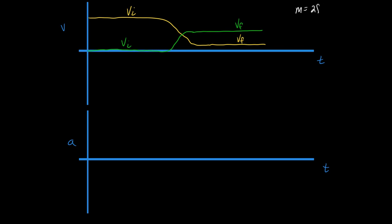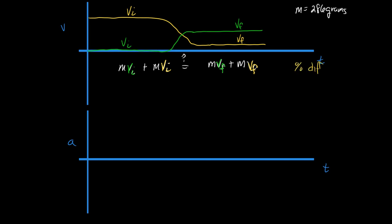You're trying to test if M times V-final plus M times V-final equals M times V-initial plus M times V-initial — comparing the yellow and green cars. If you want to see if they are statistically the same, do another percent difference calculation comparing the two sides.